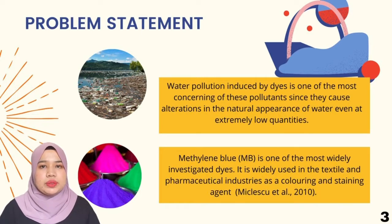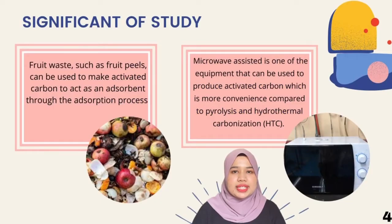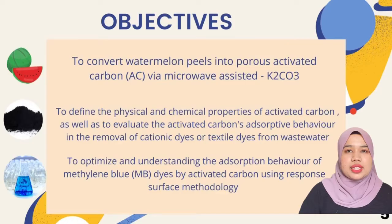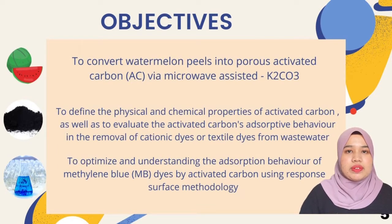Methylene blue is one of the most widely investigated dyes. It is widely used in the textile and pharmacological industry as a coloring and staining agent. Fruit waste, such as fruit peels, can be used to make activated carbon to act as an absorbent through the adsorption process. Microwave-assisted is one of the methods that can be used to produce activated carbon, which is more convenient compared to pyrolysis and hydrothermal carbonization.